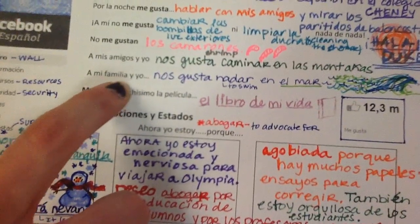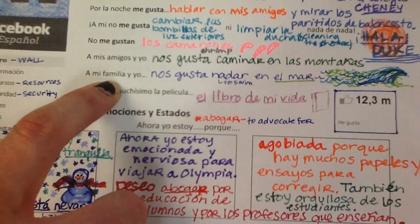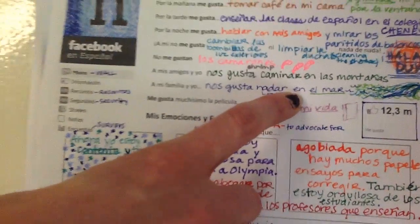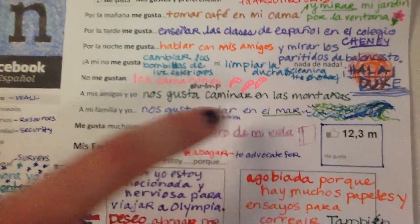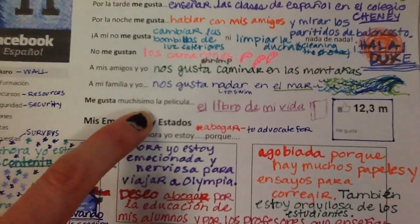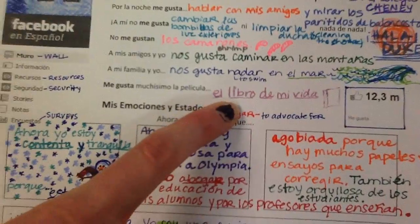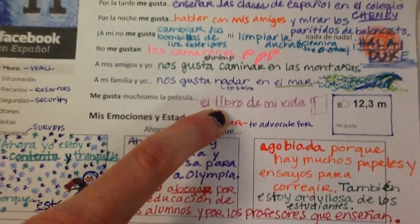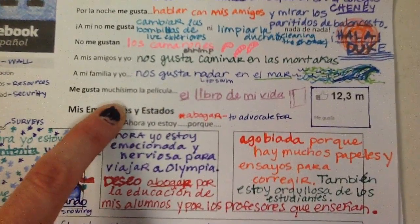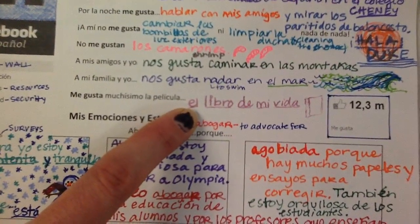Next one: a mi familia y yo — to my family and I, it is enjoyable to... What is something you and your family like to do together? A mi familia y yo nos gusta nadar — we like to swim in el mar, in the ocean. Elaborate as much as you're able to, and use your AR verbs from page 51 to help you. And last one: me gusta muchísimo — I like very much la película — and you're going to list any one movie that you like.